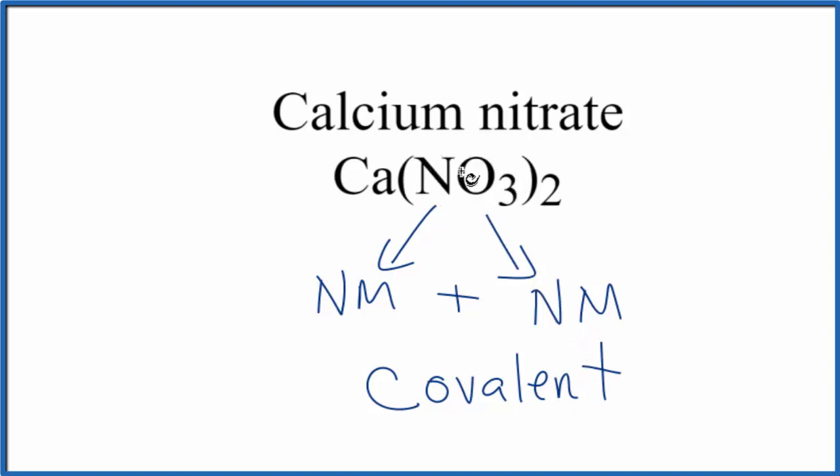So the nitrate, it's a polyatomic ion, and these bonds between the nitrogen and the oxygen, these covalent bonds, they're fairly strong. And the nitrate ion, it tends to stay together when we have chemical reactions.